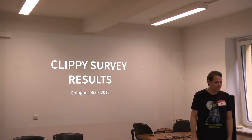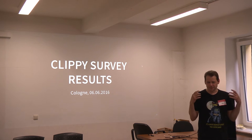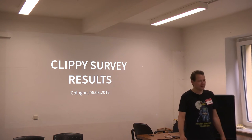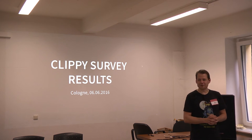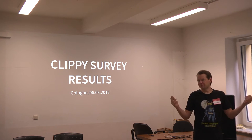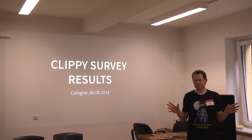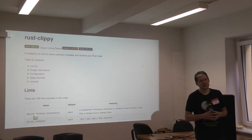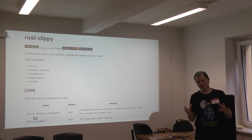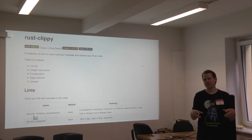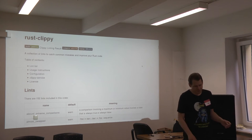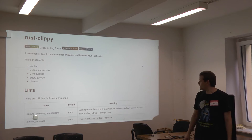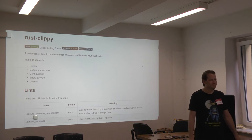Today I'm going to tell you what you folks told me, because we did a survey, as is customary with Rust projects it seems. For those who do not know what Clippy is, it's a project to create a number of lints for the Rust language. A lint is basically a piece of static analysis software that will look for patterns in your code that are, for whatever reason, problematic. The current number of lints is 152.